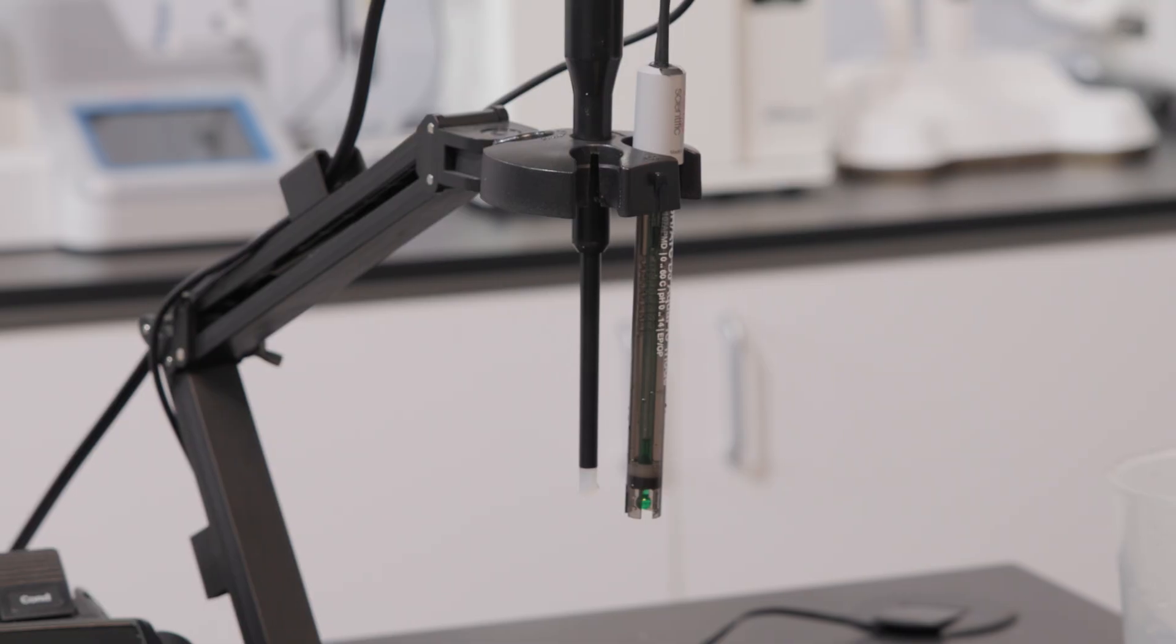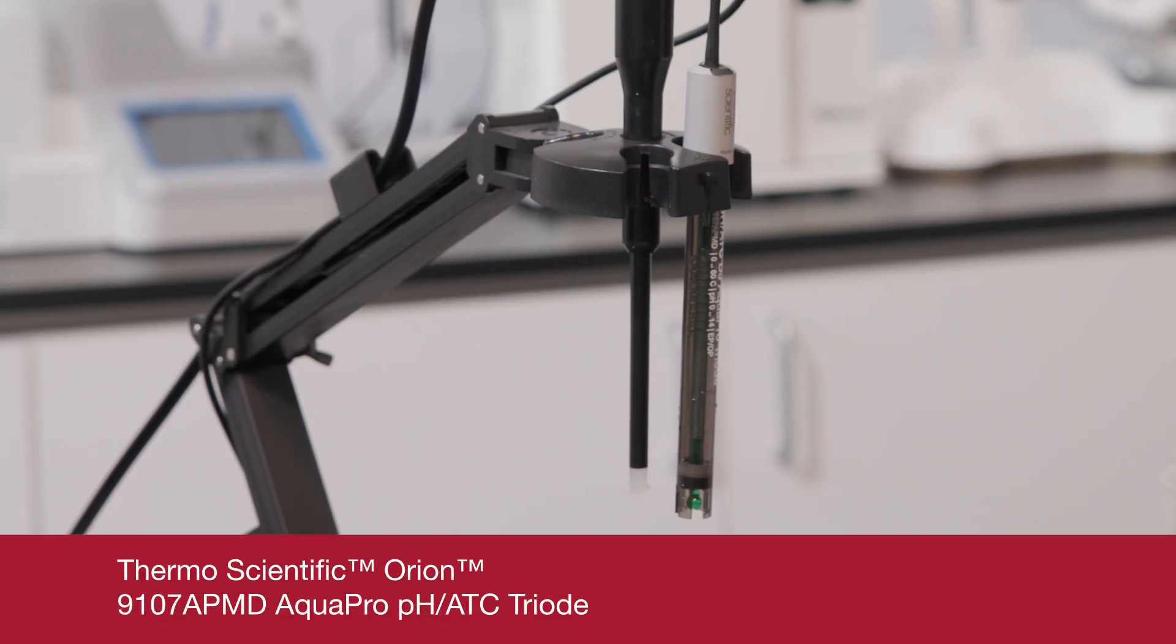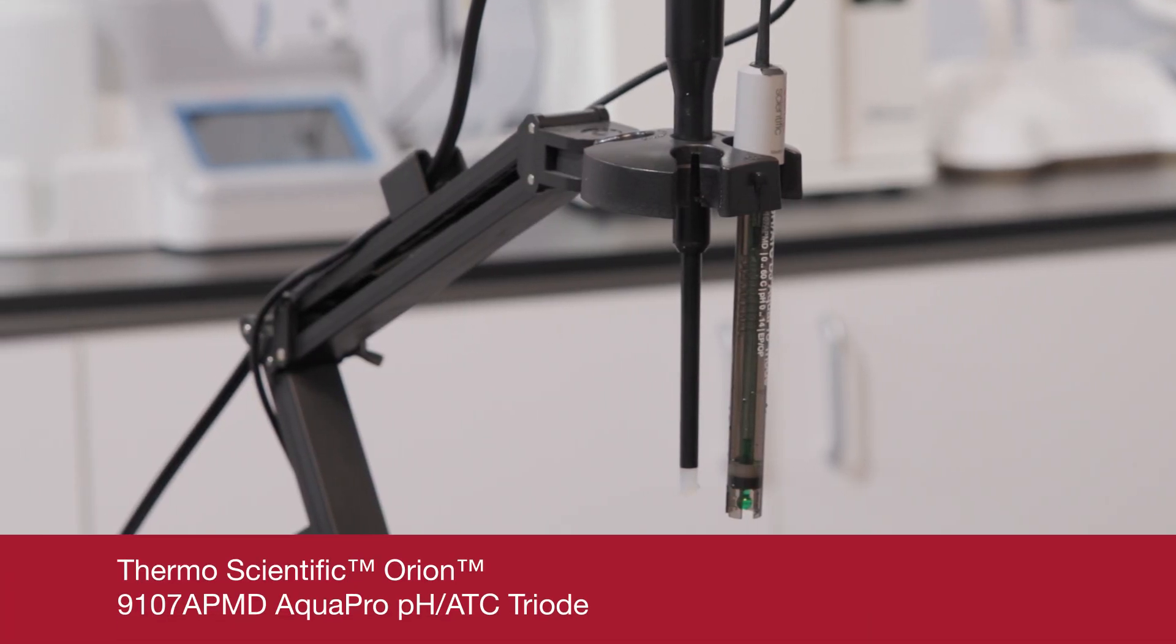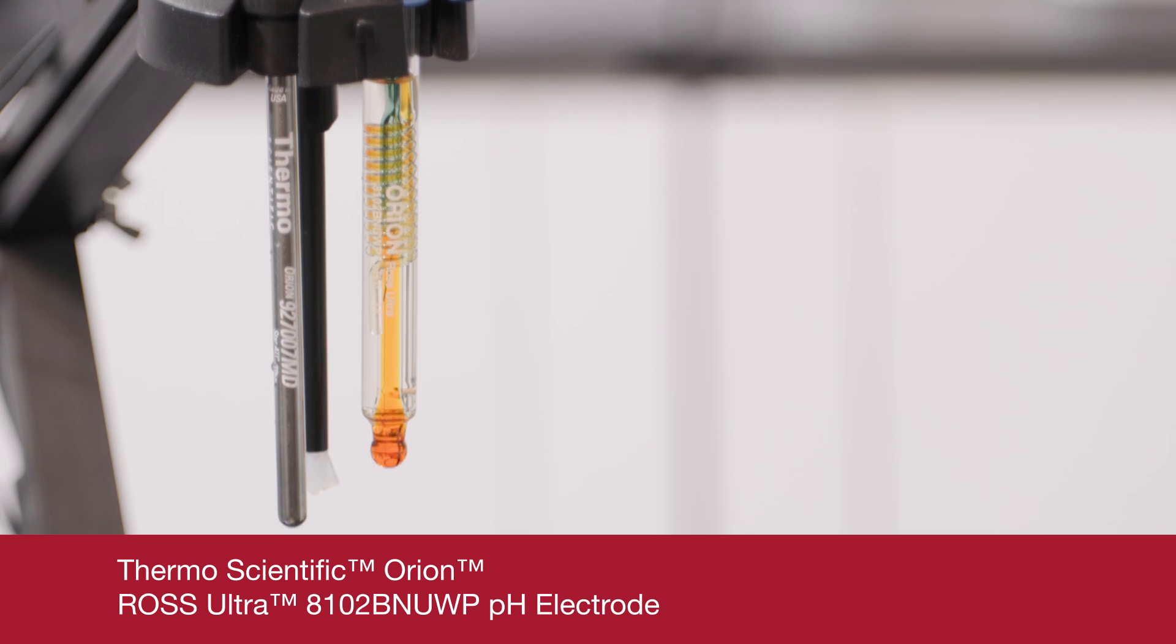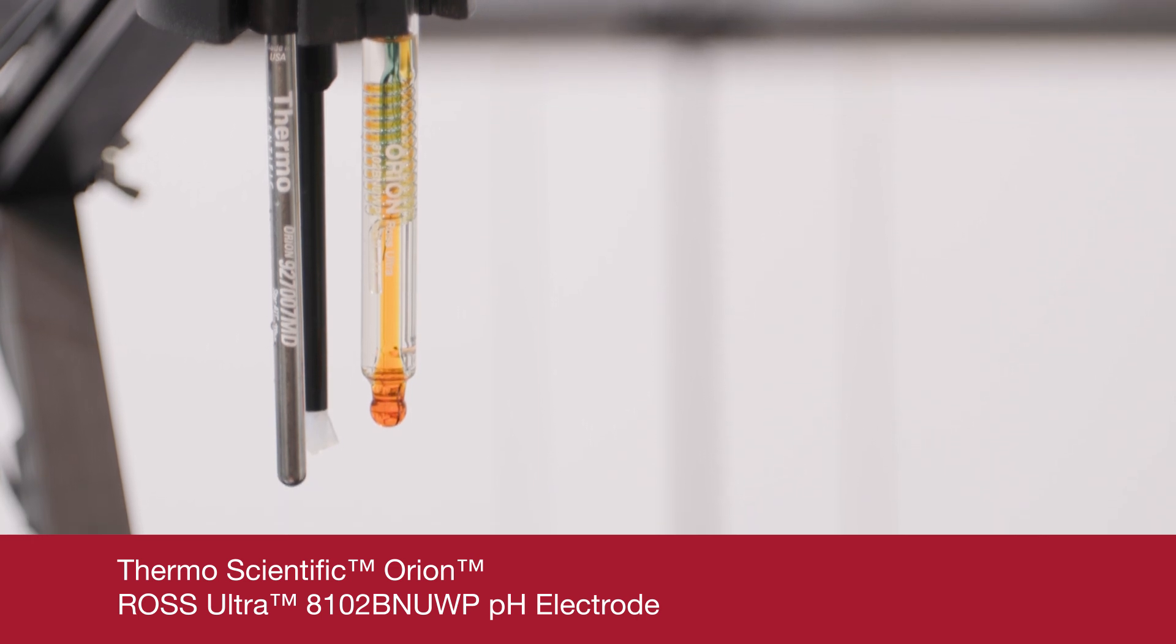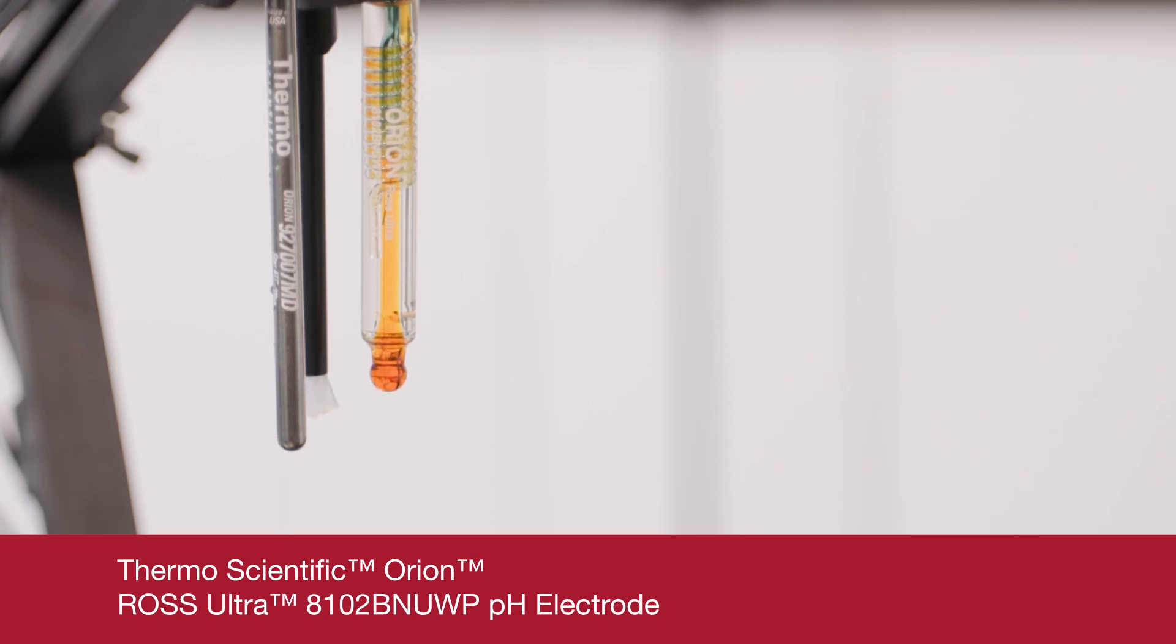The body material of an electrode also has a big impact on durability. Epoxy body electrodes are generally robust enough to protect the pH bulb and are a good choice for the field or production floor. Glass electrode bodies may seem more fragile, but they're resistant to most chemicals and are often required for use with petrochemical or solvent samples.